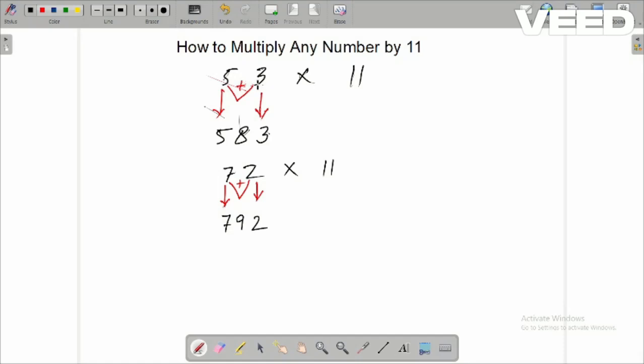So simple. When we have to multiply any two-digit number by 11, these two digits are written as it is - 3 as it is, 5 as it is - and between them their sum is written. 2 as it is, 7 as it is, and the sum of 7 and 2, 9, is written in between. So this is the quickest way to multiply any two-digit number by 11.